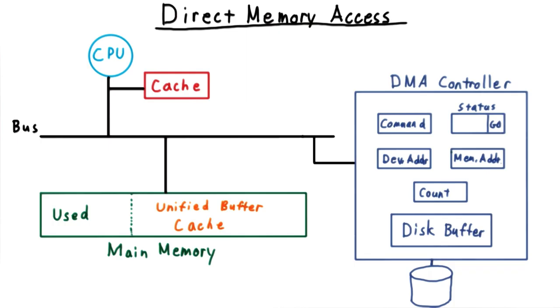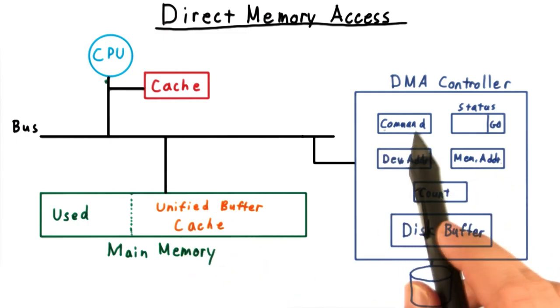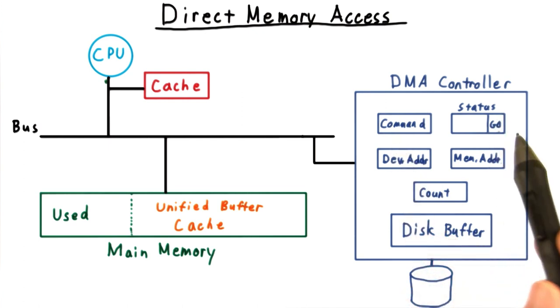Instead, streaming devices like a disk have their own controller that is capable of sending along the bus itself. Through the bus, the CPU tells it the length of the chunk it's supposed to copy, the device address on the disk, the memory address, the command, whether it's a read or a write, and then tells it to go.